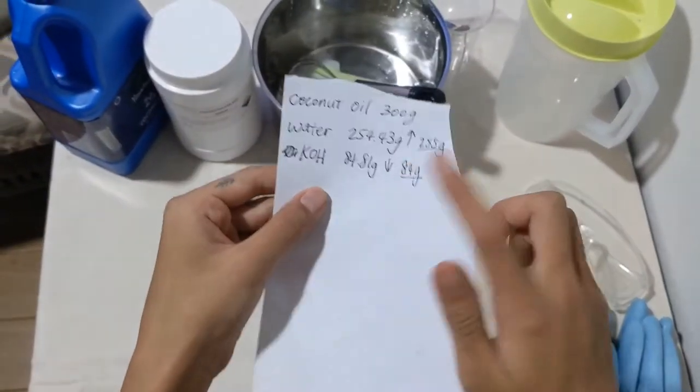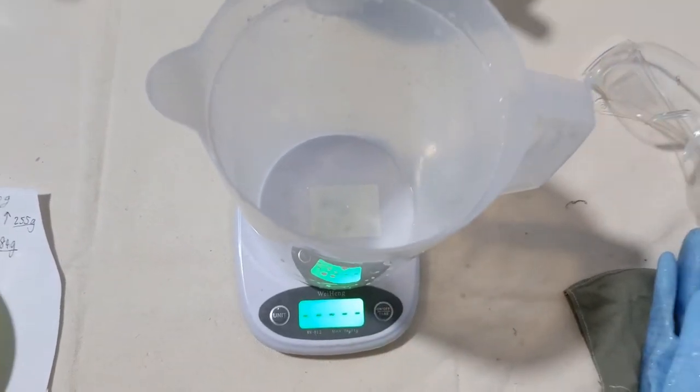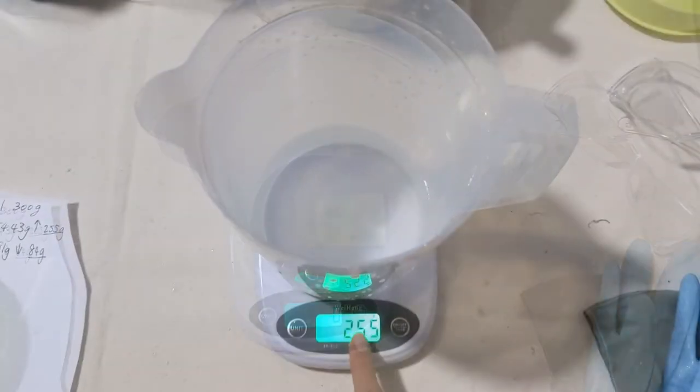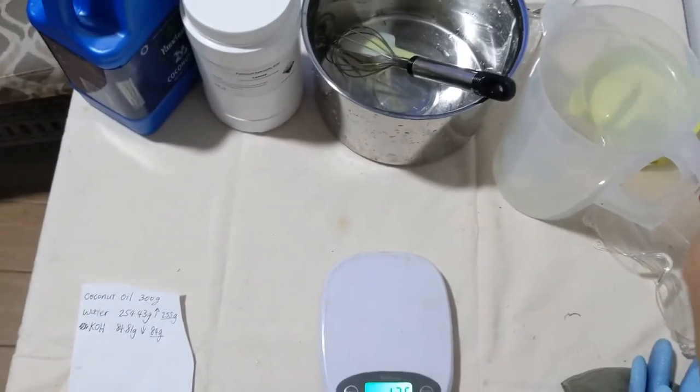The first thing we will weigh out is water. Take a lye-safe container and tare the scale. In here, I have 255 grams of water. Put it aside and cover with a lid.